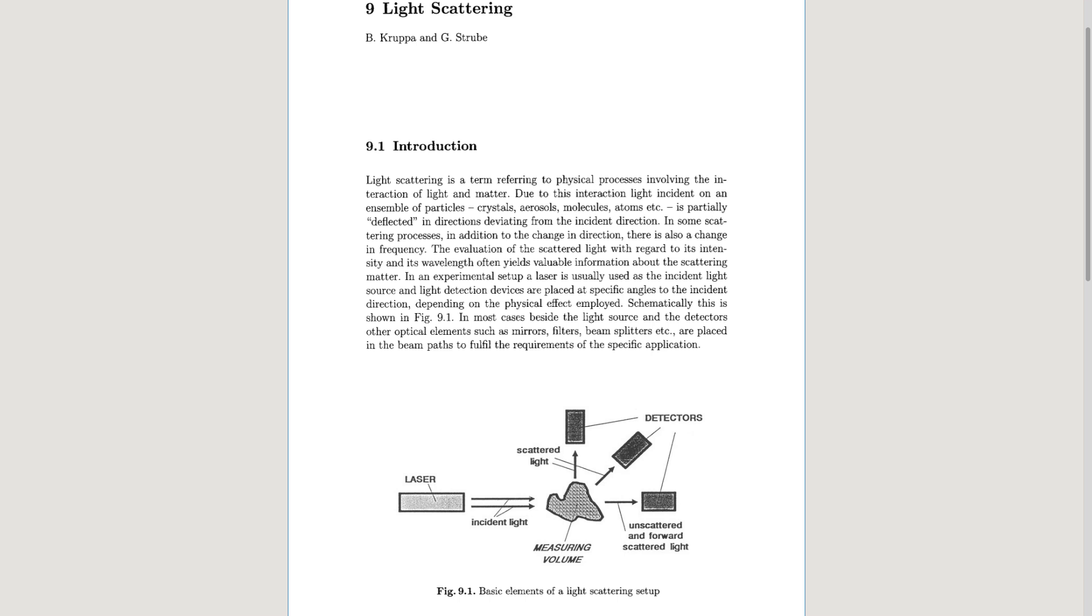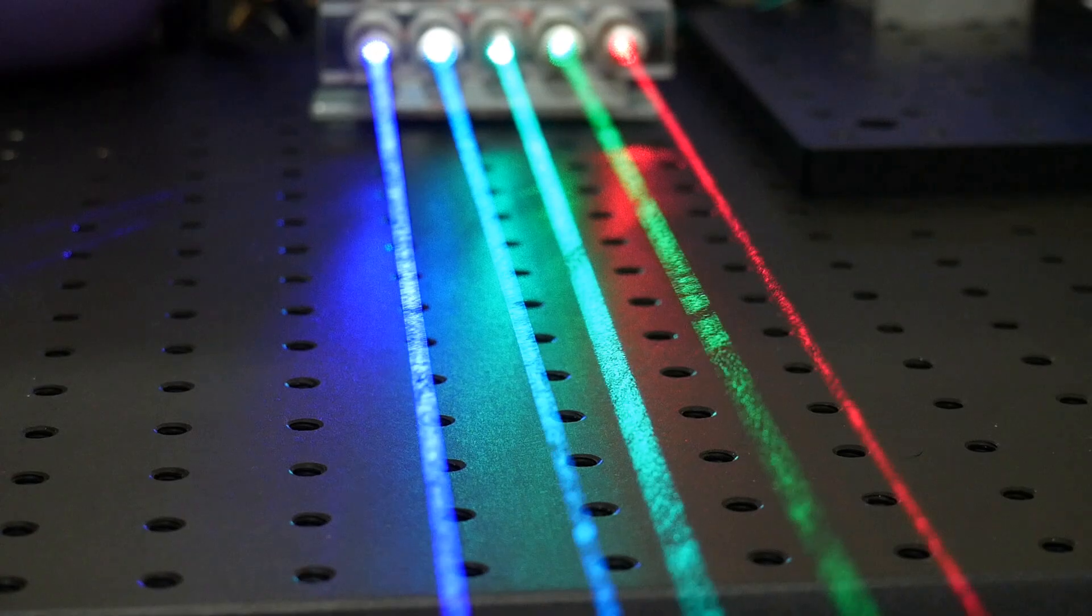A topic like Raman Lasers requires a little bit of an introduction to some fundamentals, so let's start off with light scattering. Light scattering refers to physical processes involving the interaction of light with matter. This can occur on the macro, micro and nanoscopic scales.